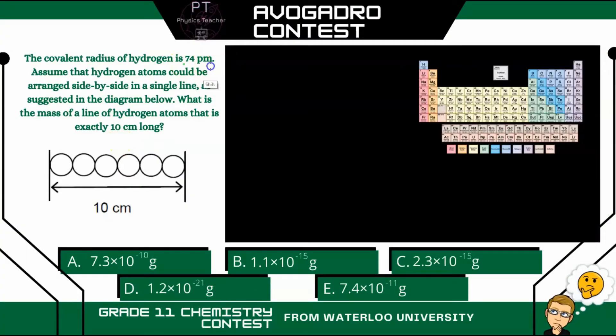Okay, so if the radius is 74 picometers, then we can figure out the diameter of any one of these just by multiplying the radius by 2. And that turns out to be 148 picometers.